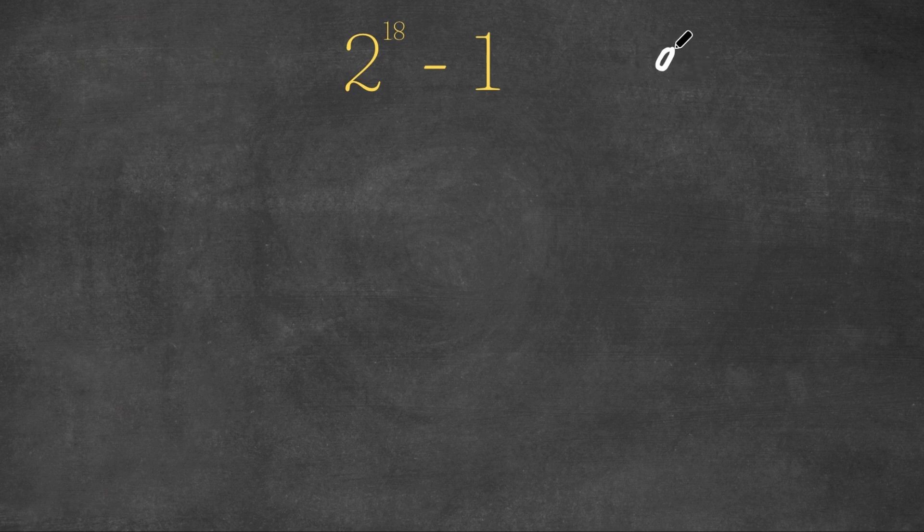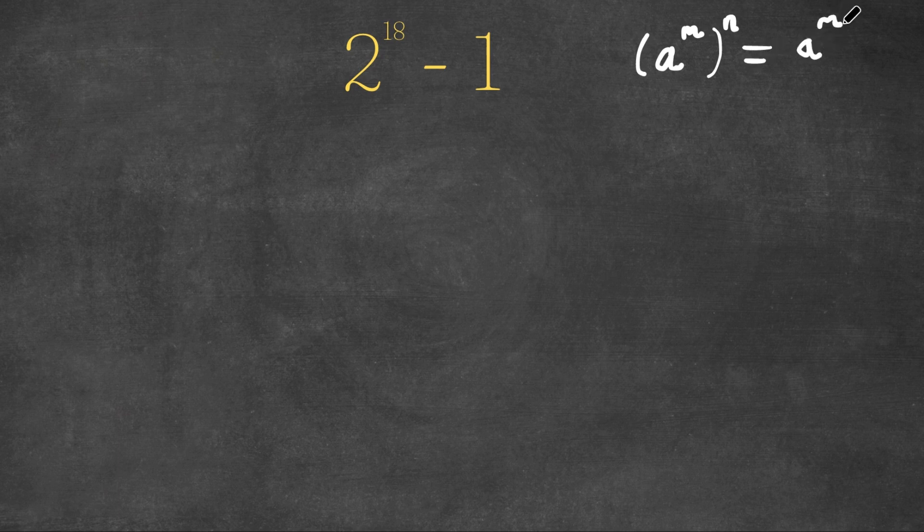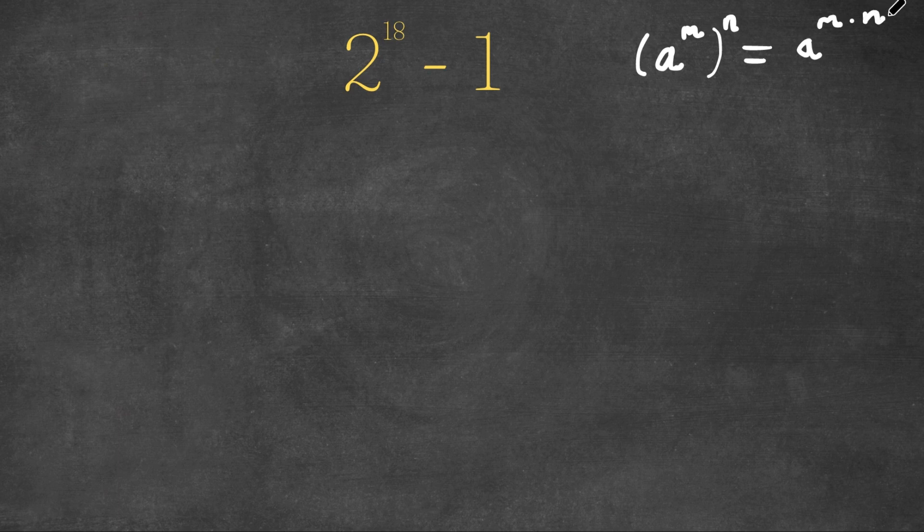Now if we have something in the form a to the power of m to the power of n, this is equal to a to the power of m times n. And the same thing goes vice versa. a to the power of m times n can be written as a to the power of m to the power of n.